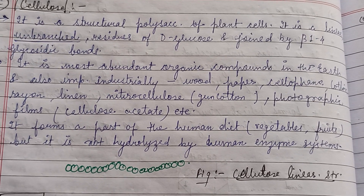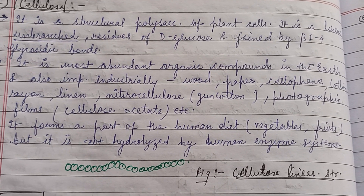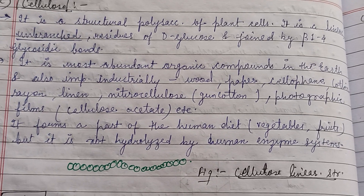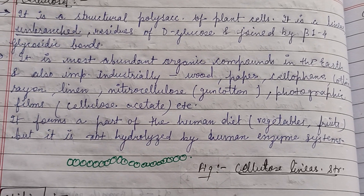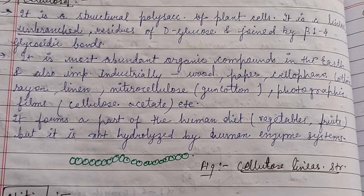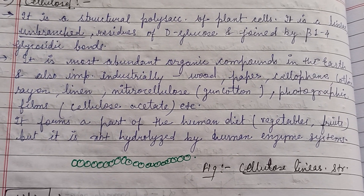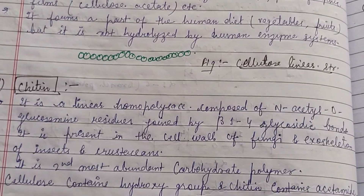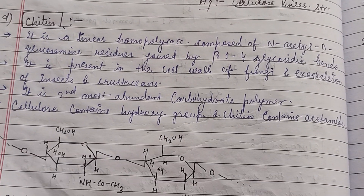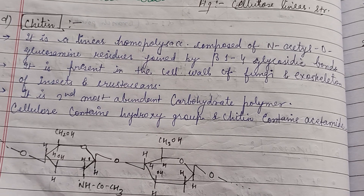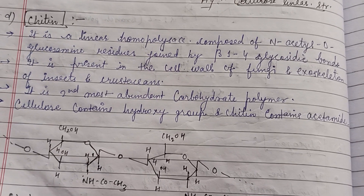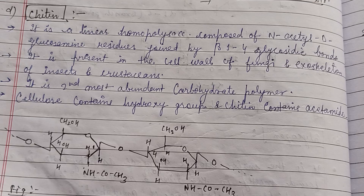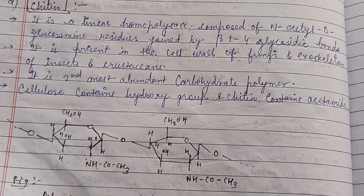Cellulose is the most abundant organic compound in nature. It has an unbranched structure with only beta 1-4 linkage and no branching at alpha 1-6 linkage. Chitin is a linear homopolysaccharide composed of N-acetyl-D-glucosamine residues joined by beta 1-4 glycosidic bonds, also an unbranched structure.